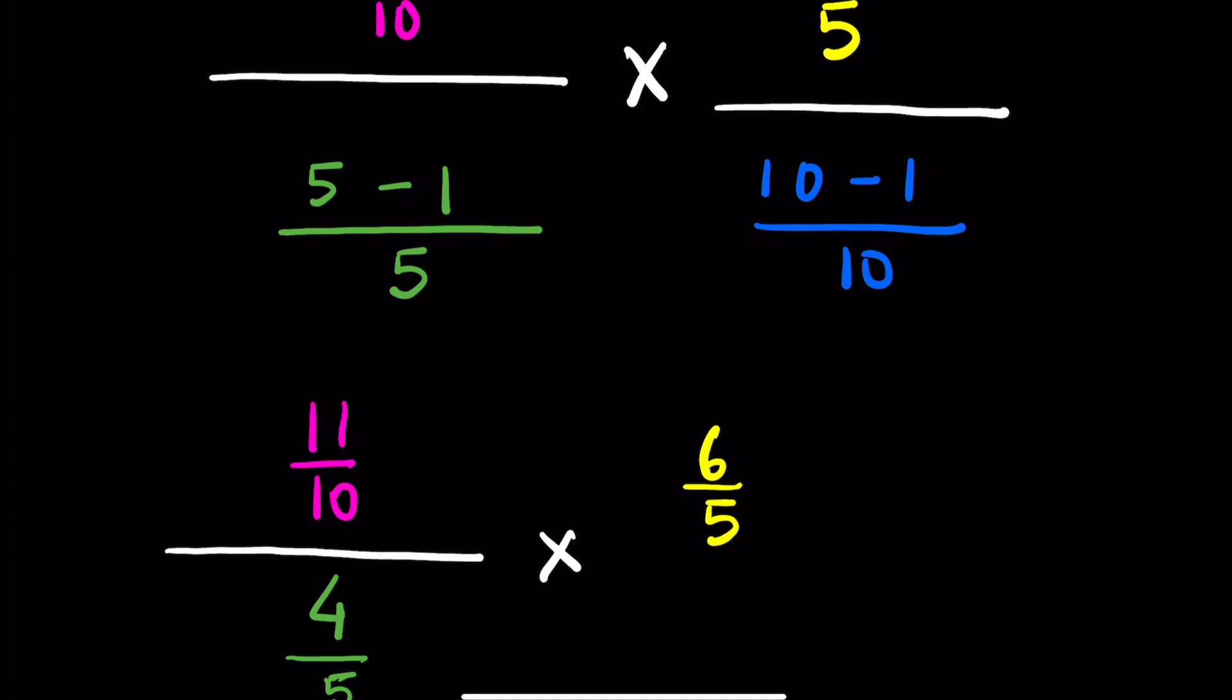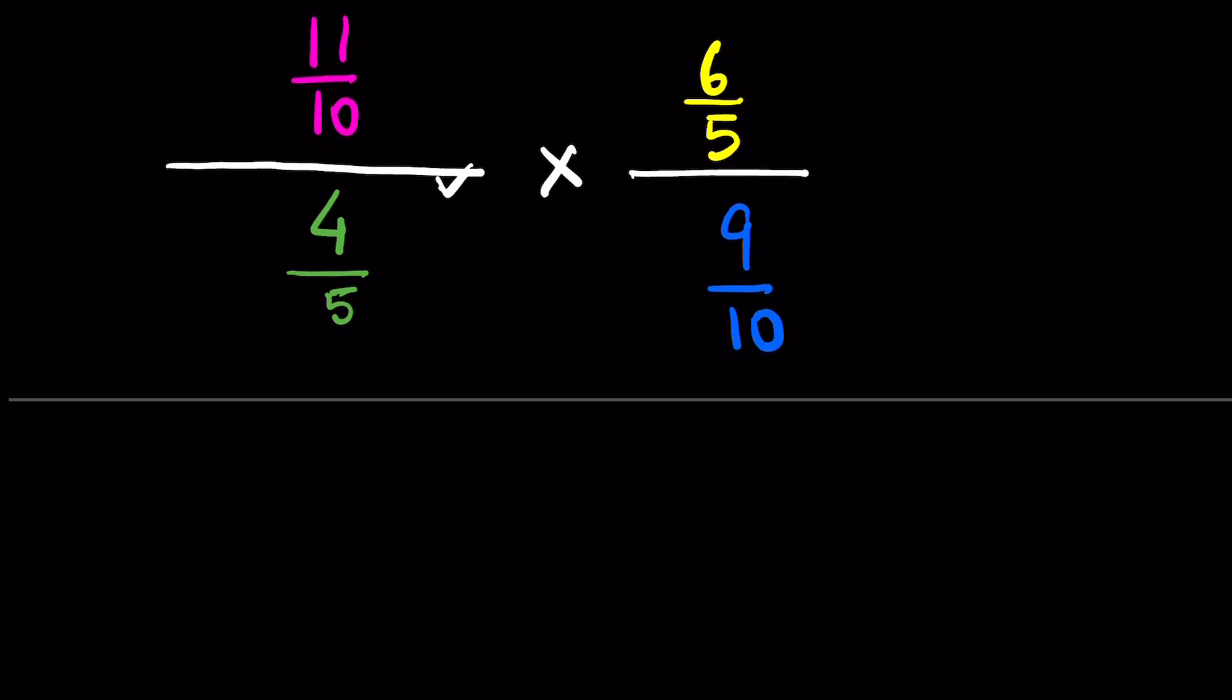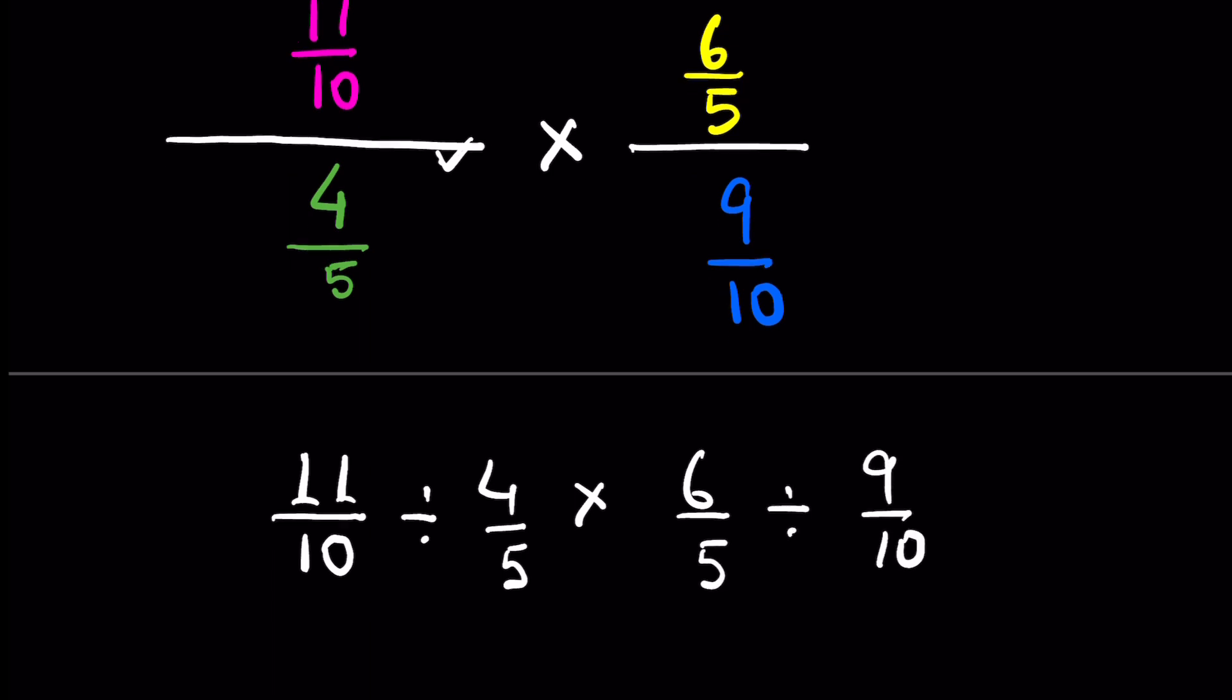Now this bar here means division, so we can write 11 upon 10 divided by 4 upon 5, then multiplication, 6 upon 5 divided by 9 upon 10.